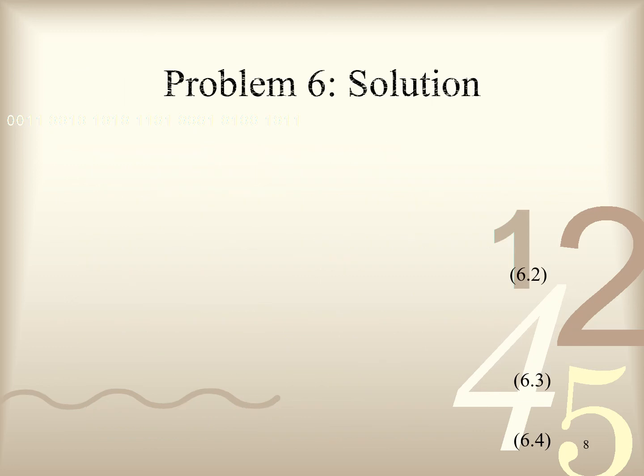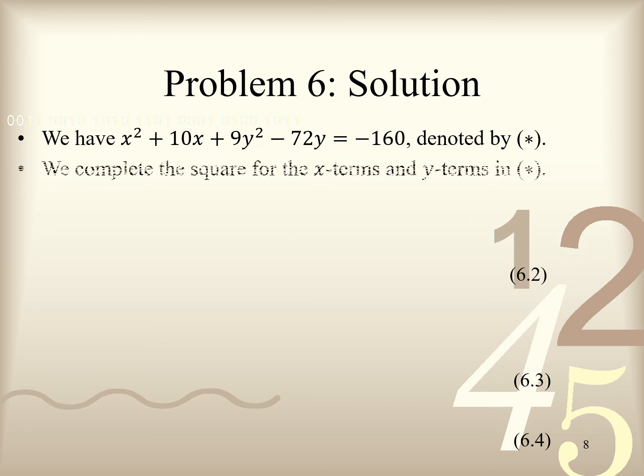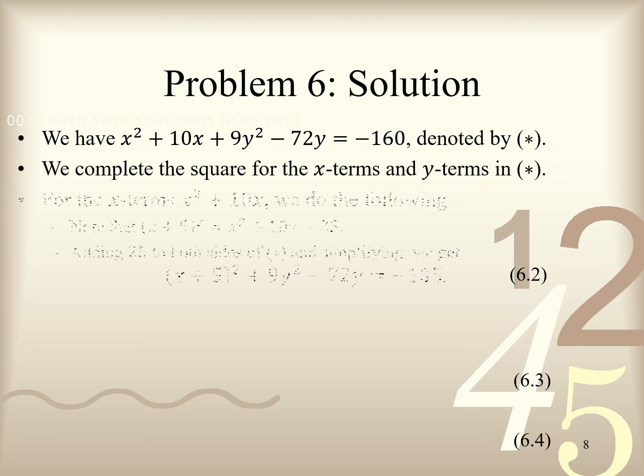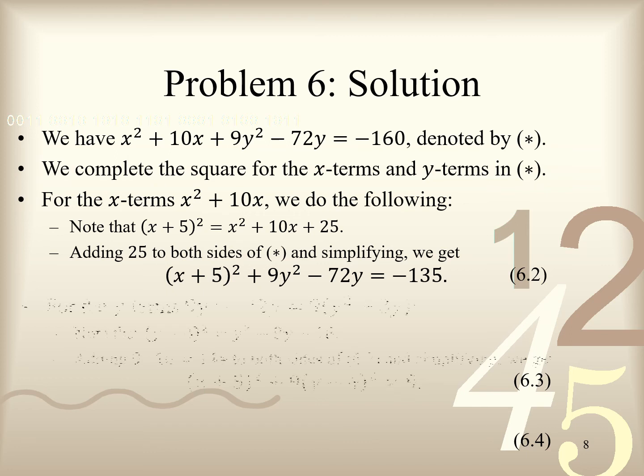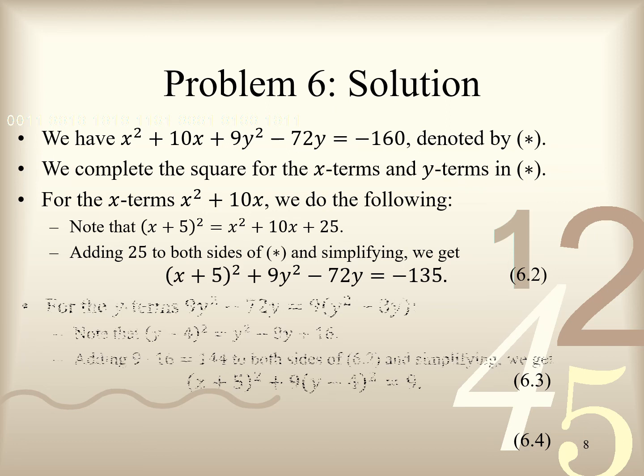Now we are ready to solve problem 6. Recall that the equation of the ellipse we were given was denoted by star. Note that star is in fact the general form equation of the ellipse, which we need to convert to the standard form equation. To accomplish this, we can complete the square for the X terms and Y terms in star. For the X terms x² + 10x, we do the following. Note that (x + 5)² equals x² + 10x + 25. Adding 25 to both sides of star and simplifying, we get (x + 5)² + 9y² - 72y = -135, which we label as 6.2.